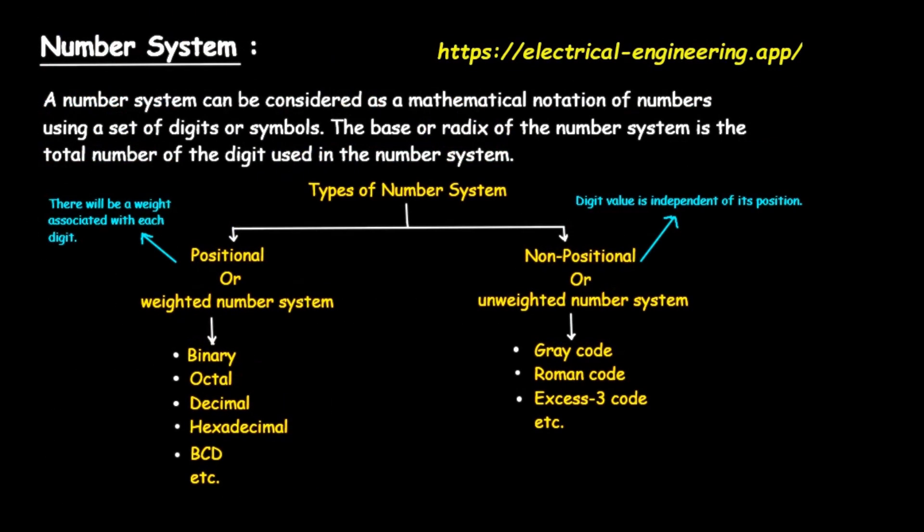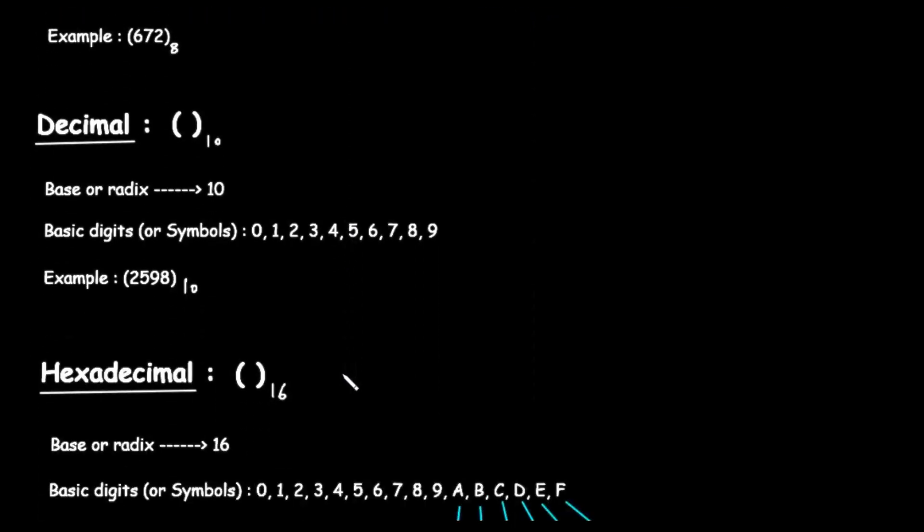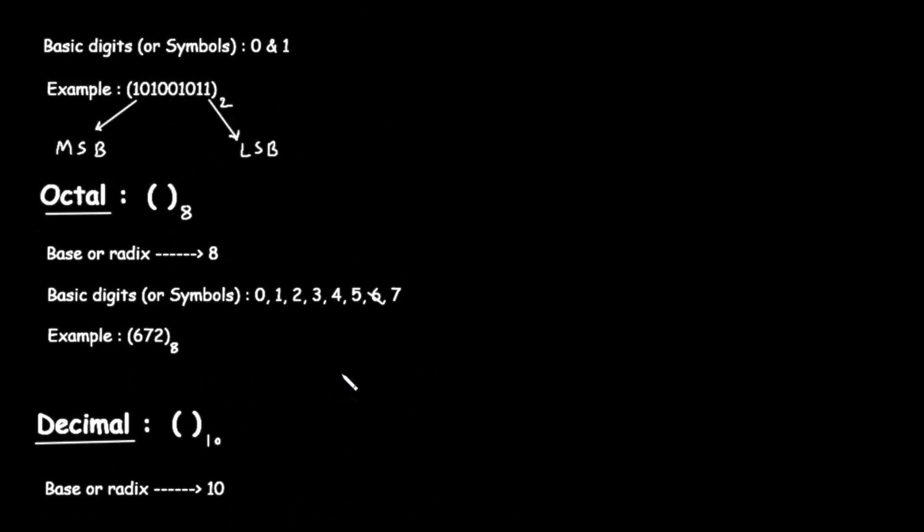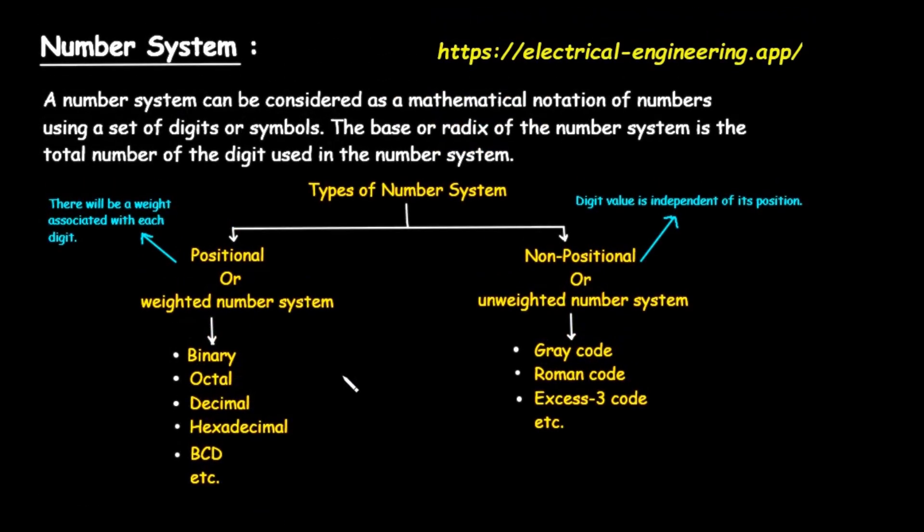So, to recap. A number system is a way of writing numbers using a set of symbols. The base tells us how many symbols are in that set. Positional systems, like the ones we focused on, give digits different values based on their position. Binary, or base 2, uses just 0 and 1, and is the language of computers. Octal, or base 8, uses digits 0 through 7. Decimal, or base 10, is our everyday system, using digits 0 through 9. And hexadecimal, or base 16, uses digits 0 through 9 and the letters A through F.